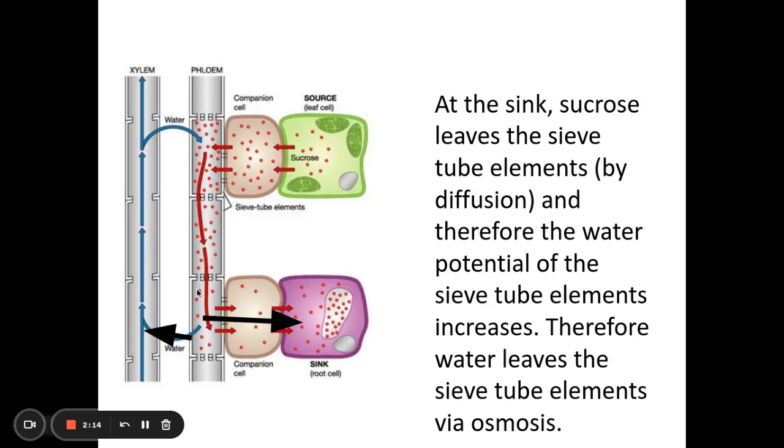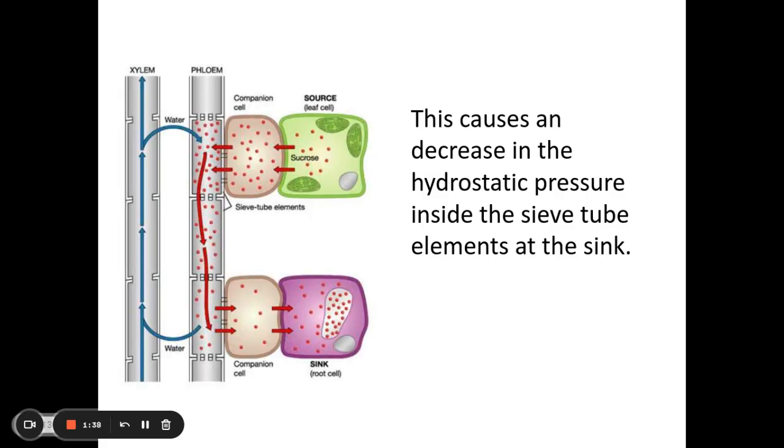Okay, so at the sink, which is where the sucrose in this case is being used up, the sucrose is going to leave usually via diffusion because it's going from a higher concentration inside the phloem to a low concentration outside. Now because the sucrose is moving out of the phloem, it means that I'm going to get an increase in water potential inside of my sieve tube elements, which means that water is going to leave via osmosis. Now that might go back into the xylem, but it might go back into surrounding tissues. But either way, because I've got water leaving via osmosis, this means I'm going to get a decrease in the hydrostatic pressure inside of my sieve tube elements.